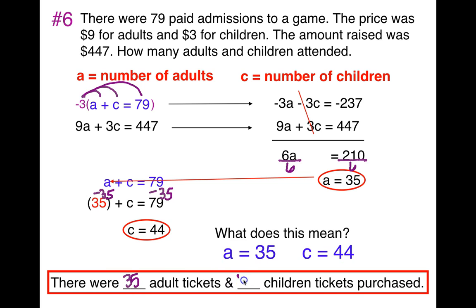So there are 35 adults and 44 children. Remember what the variables represent, because you are answering a question — you can't simply write A = 35, C = 44 without stating that 35 adults and 44 children attended.